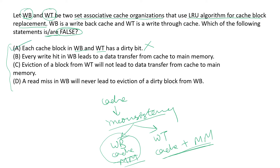The second statement says every write hit in a write-back cache leads to a data transfer from cache to main memory. This is false because not every write hit leads to a data transfer — that occurs only when a particular cache block is evicted. It can take several writes, and all of them would be propagated to the main memory at a later stage. So again, this statement is false.